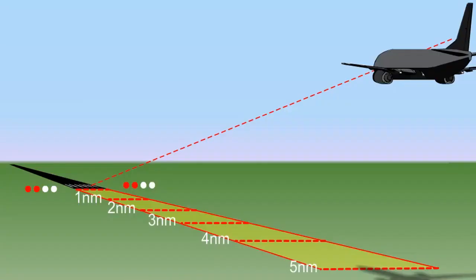For noise abatement approach procedures, two basic parameters are applied. Namely, that the aircraft will be in the landing configuration from the earlier of 5 nautical miles from the runway threshold, or the ILS outer marker, and that no excessive rates of descent will be required.